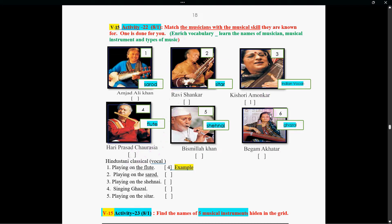Here are the pictures of musicians. Number one, Amjad Ali Khan. Number two, Ravi Shankar. Number three, Kishori Amonkar. Number four, Hari Prasad Chaurasia. Number five, Bismillah Khan. And number six, Begum Akhtar.